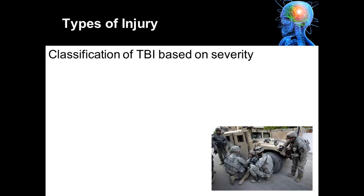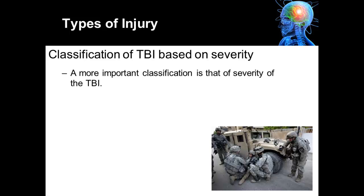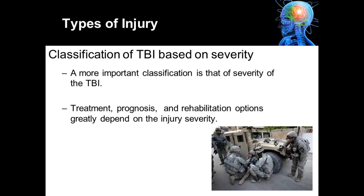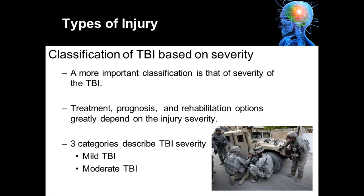Another way to classify a traumatic brain injury is based on severity. This is a very important classification as it depicts the amount of injury to the brain. Treatment, prognosis, and rehabilitation options greatly depend on the severity of the injury. There are three categories: mild traumatic brain injury, moderate traumatic brain injury, and severe traumatic brain injury. A mild traumatic brain injury is the same thing as a concussion.